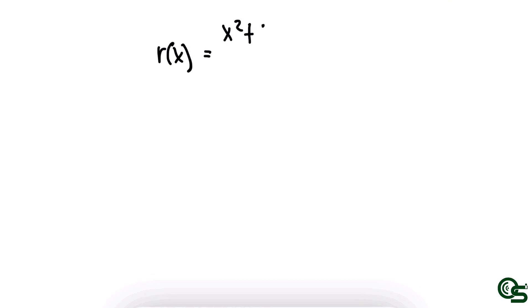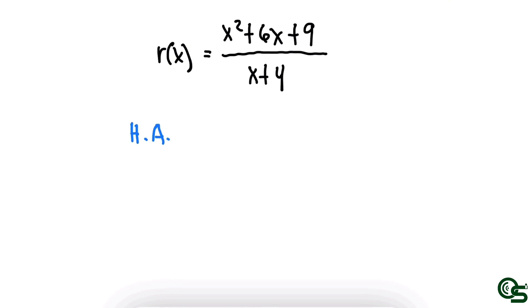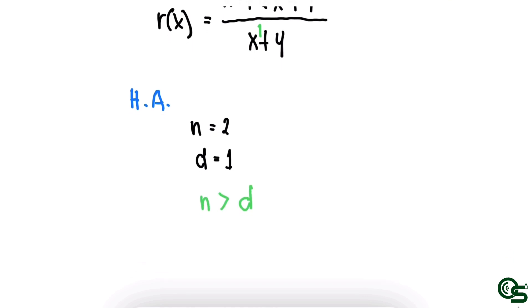Using the same example, r of x equals x squared plus 6x plus 9 all over x plus 4, we now find the horizontal asymptote. Observing the degrees: the numerator has x raised to 2, giving degree 2, while the denominator has x raised to 1, giving degree 1. The numerator is greater than the denominator, and since that is the case, there is no horizontal asymptote.